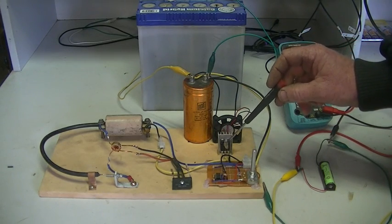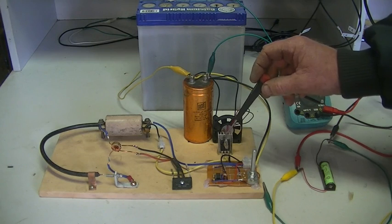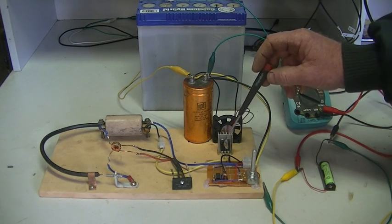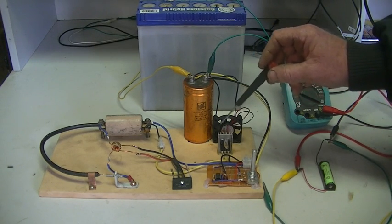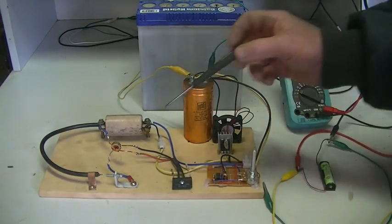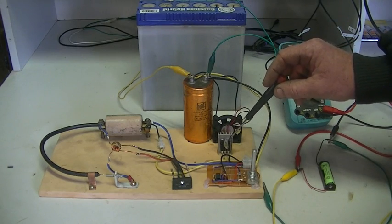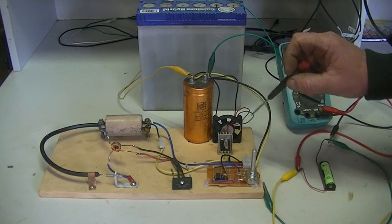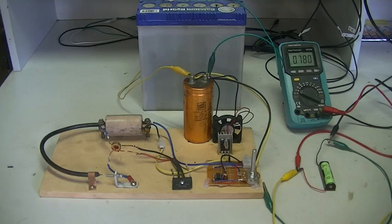Also put a little neon across the transistor to save it because we do get some interruptions in the spark, it's a little bit erratic. You'll see this neon light up every now and then, so that's just protecting our transistor.